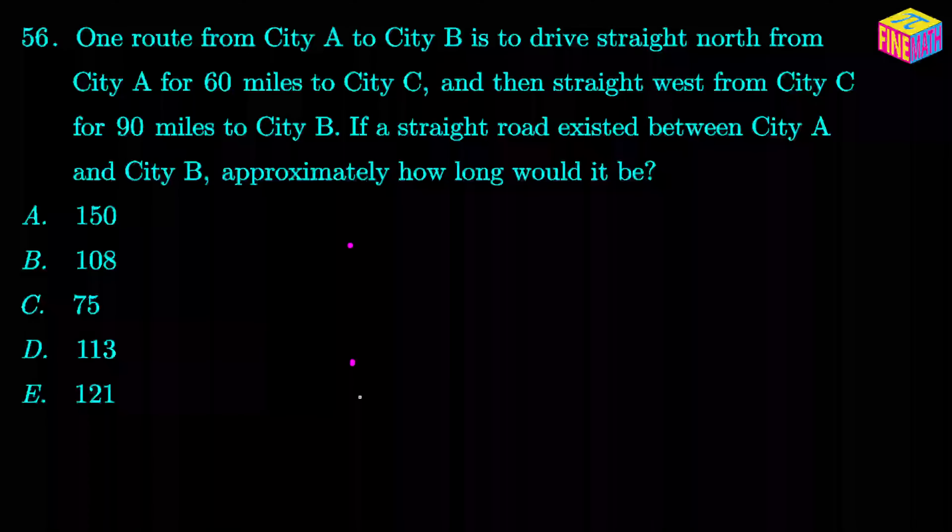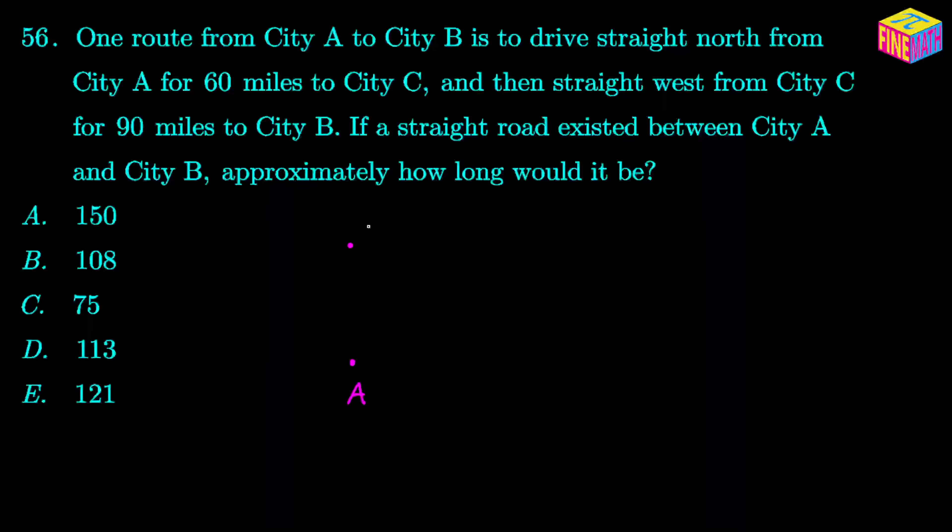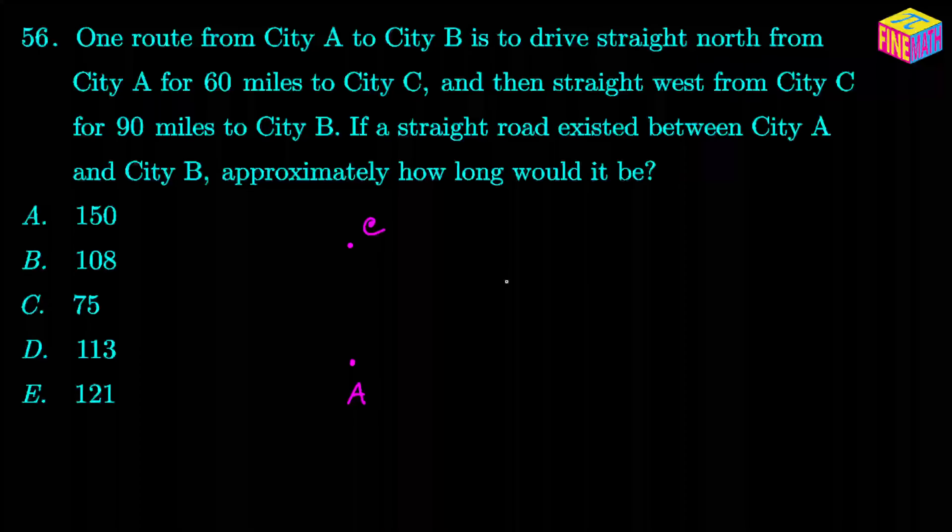So city C would be right there. If this is A and then this would be C, and then from there we have to drive straight west for 90 miles. So if we drive about 90 miles to the west, then our city B would be somewhere around here.